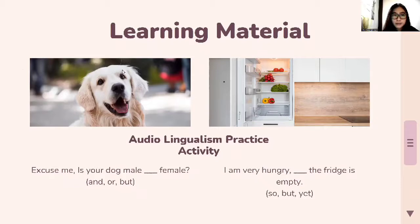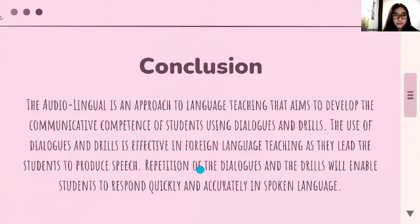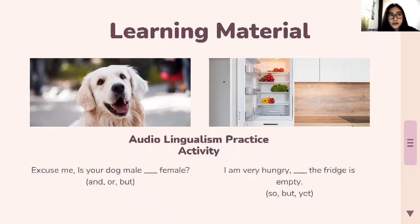The first sentence is: 'Excuse me, is your dog male ___ female?' Students must analyze the sentence and, for this activity, choose the correct conjunction from the given choices. This is like a substitute drill, where students are given options and must pick the right one to use in the sentence.